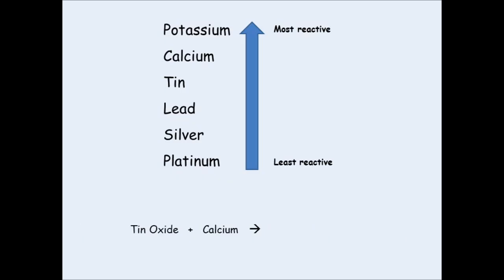Another one: tin oxide plus calcium. Please pause this presentation and have a go at predicting the products. Hopefully you've determined that we would have tin and calcium oxide. First, identify the two metals — tin and calcium. Looking at the series, calcium is above tin, so it is more reactive. Calcium kicks out the tin and claims the oxide for itself, giving calcium oxide as a product.